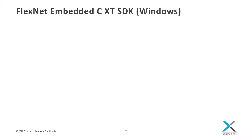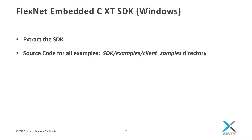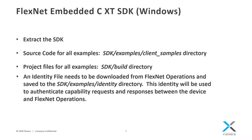I'm going to be demonstrating the FlexNet Embedded C XT SDK for Windows. The SDK structure and examples for Linux and Mac will be similar — please consult the FlexNet Embedded getting started guide for details. First, extract the SDK downloaded from the Flexera product and license center. The source code for all examples can be found in the SDK examples client samples directory. The project files can be found in the SDK build directory. In order to run the examples, an identity file needs to be downloaded from FlexNet Operations and saved to the SDK examples identity directory. This identity file will be used to authenticate the capability requests and responses between the device to be licensed and FlexNet Operations.